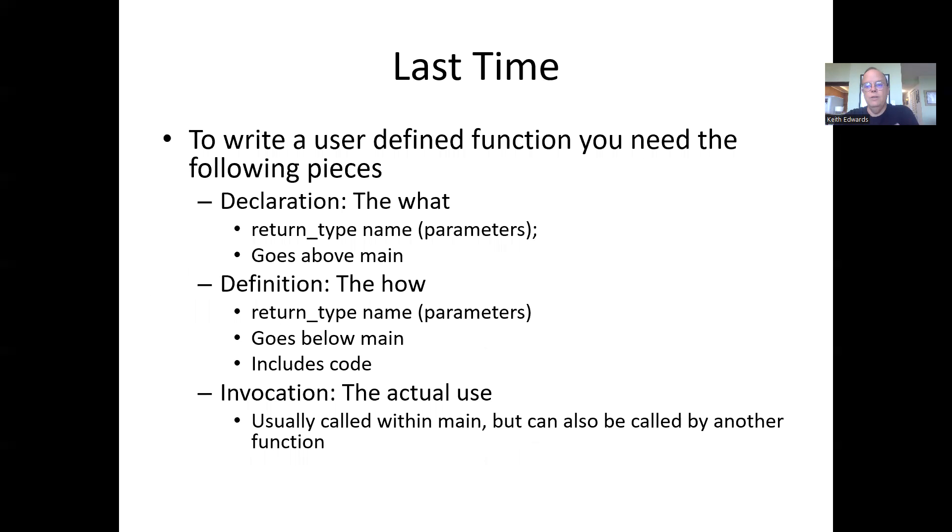To write a user-defined function, you need three different pieces. There's the function declaration that goes at the top—this tells you what the function is going to do. It has the return type, followed by the name, followed by the list of parameters, with a semicolon after it. The definition is the how—how you're actually going to accomplish it.